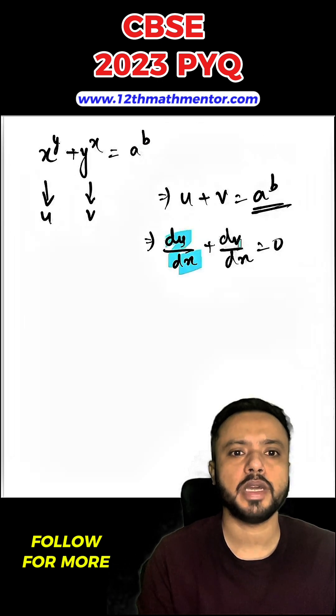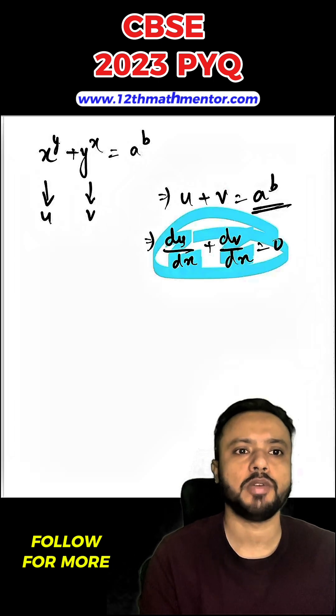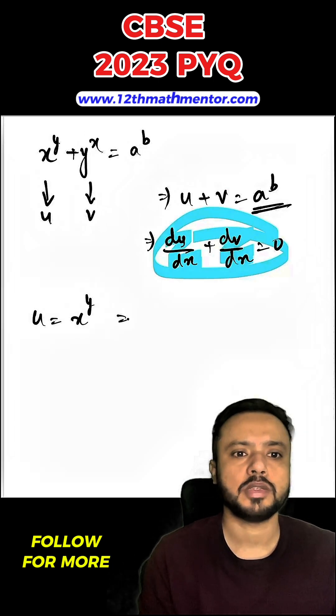So basically, I am going to calculate du upon dx and dv upon dx, then substitute them here and equate to 0 to calculate the value of dy upon dx. u is x raised to the power y, so I can say log u equals y log x. Now I am going to differentiate both sides with respect to x.